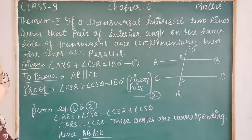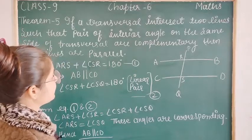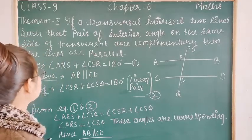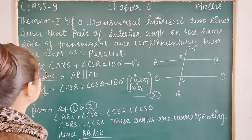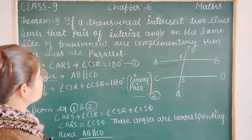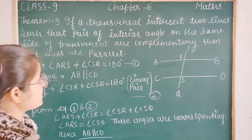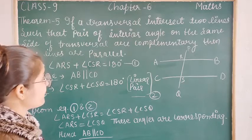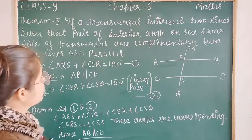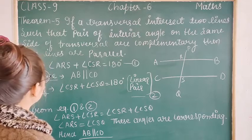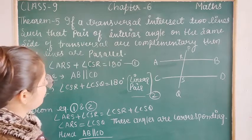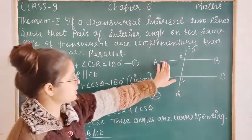If a transversal intersects two lines such that the pair of interior angles on the same side of the transversal are complementary, then we have to prove that the two lines are parallel.